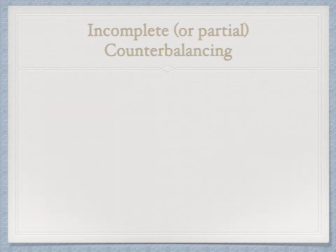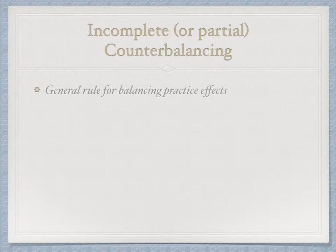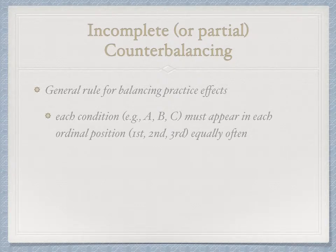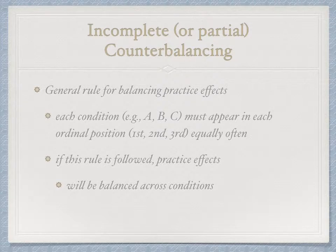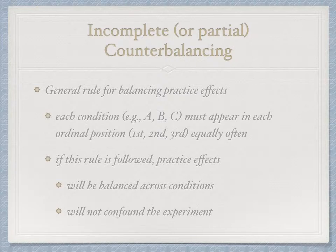When manipulations are more time-consuming or longer, you can do incomplete or partial counterbalancing. The general rule is that we need each condition to appear in each ordinal position equally often. So we want A to be first, second, and third; B to be first, second, and third; C to be first, second, and third. If we follow this rule, practice effects are balanced across conditions and won't confound the experiment.